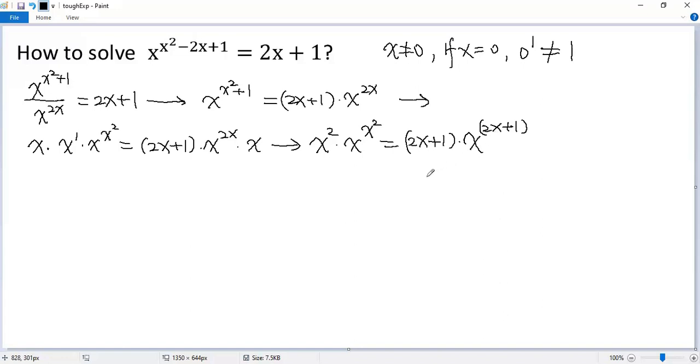Do you notice some symmetry? x squared x squared 2x plus 1 2x plus 1. So if x squared equals 2x plus 1 you will see the x must be a solution of the resulting equation. Therefore it is also the solution of the given equation. To find these solutions simply we solve the quadratic equation.